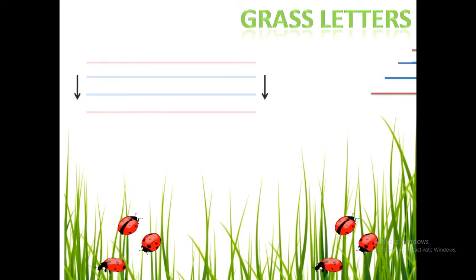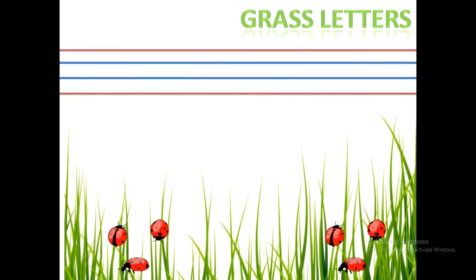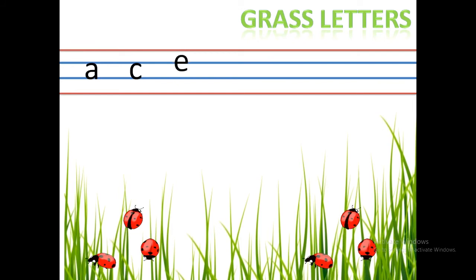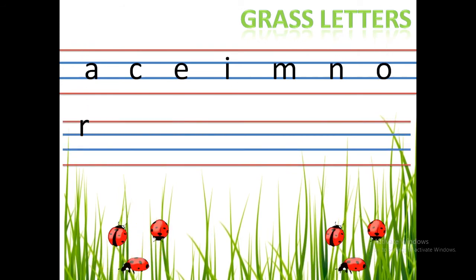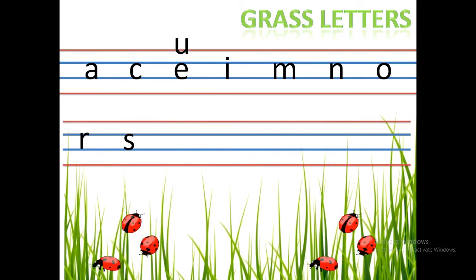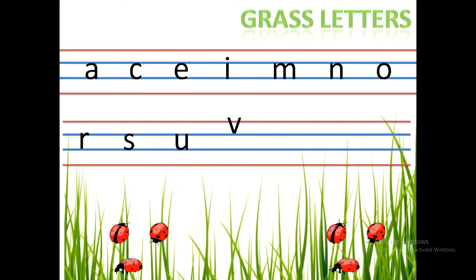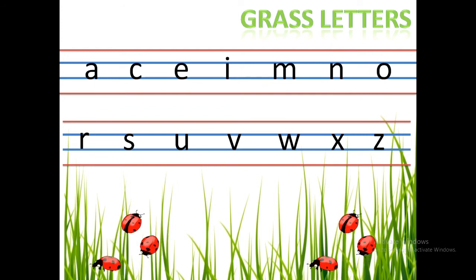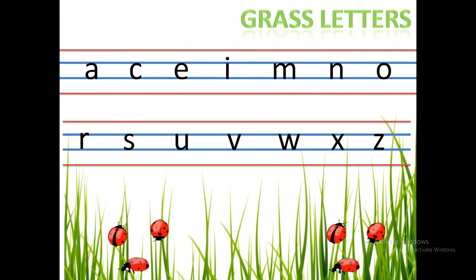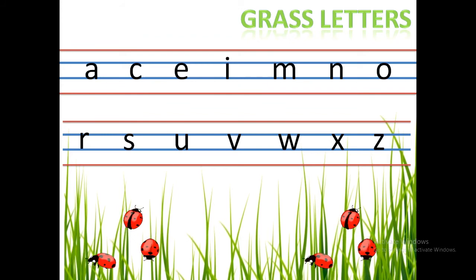Let's see which letters are grass letters: a, c, e, i, m, n, o, r, s, u, v, w, x, and z. Look at these letters — all are written only in between the two blue lines. These letters don't touch the top and bottom red lines.